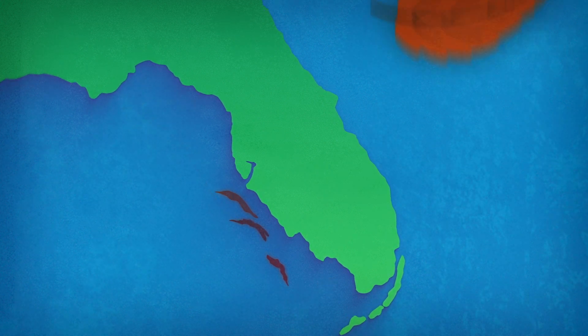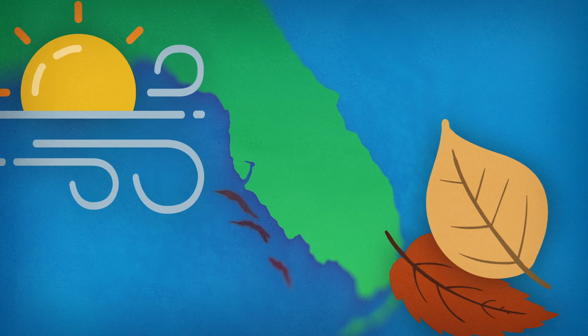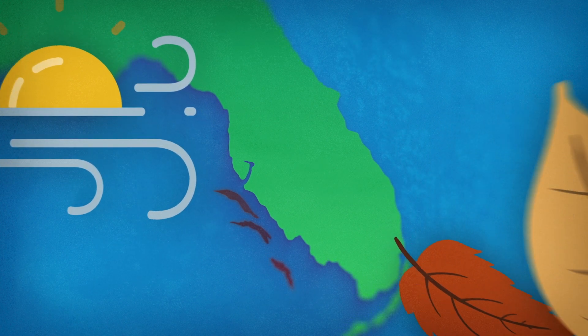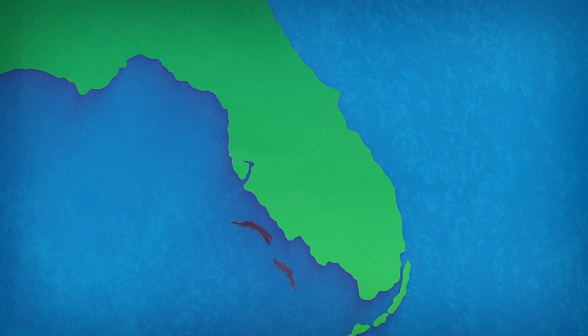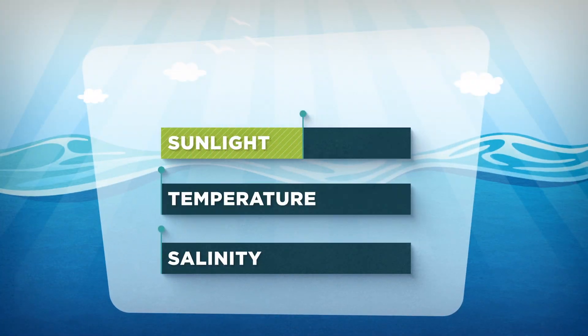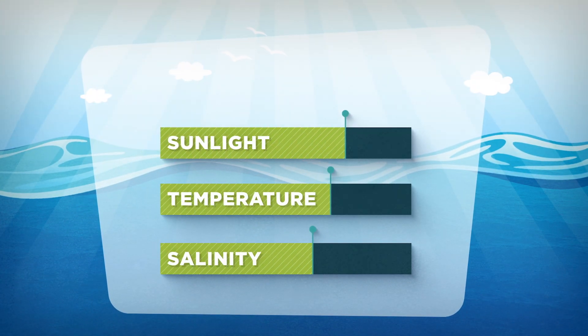Blooms typically start during summer or fall when winds and currents create conditions that concentrate the populations of red tide cells as they are transported towards the coast. Sunlight, temperature and salinity are important for growth.